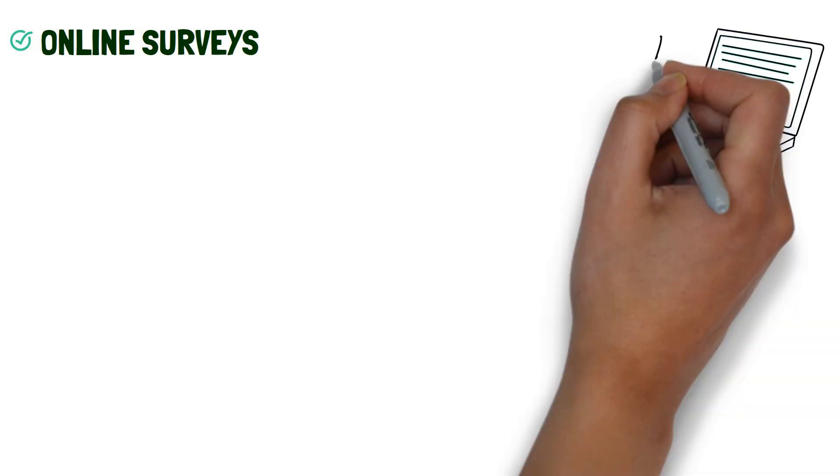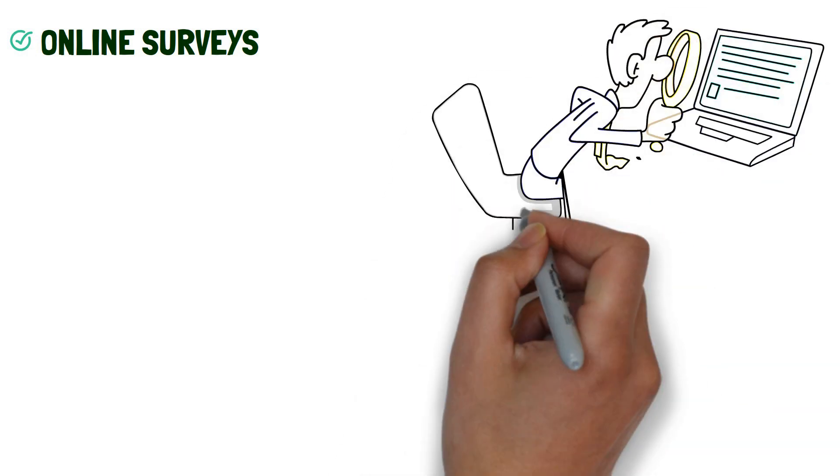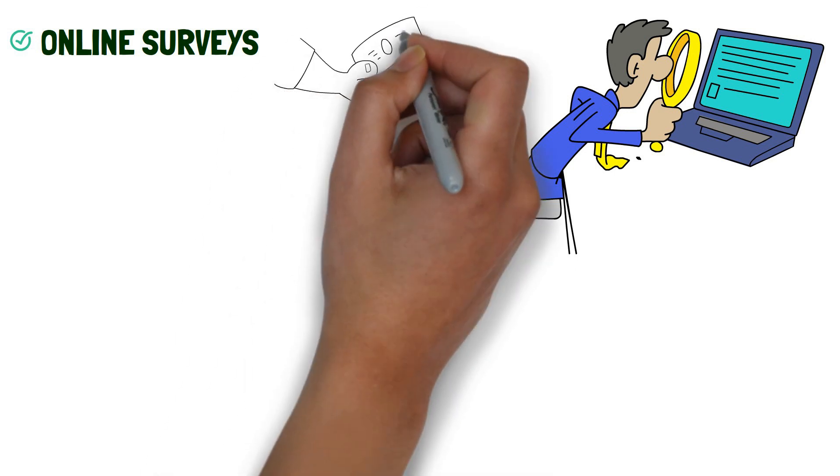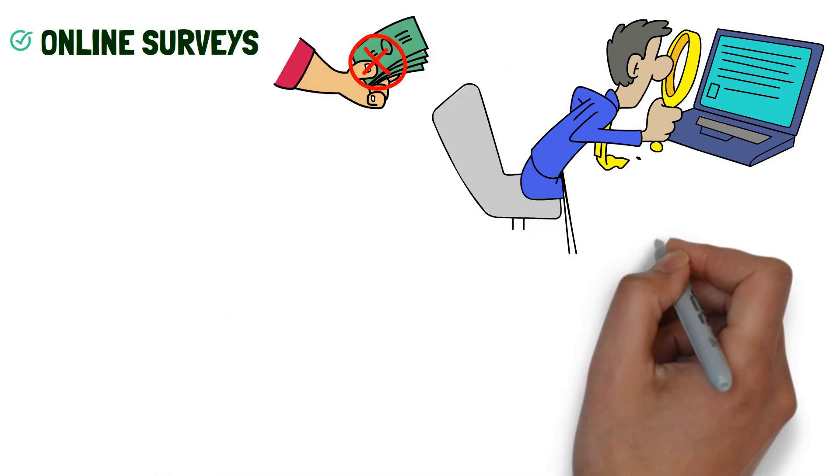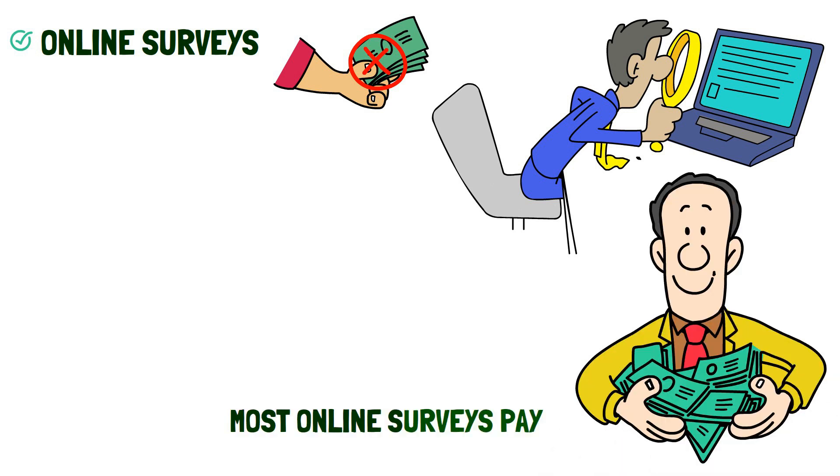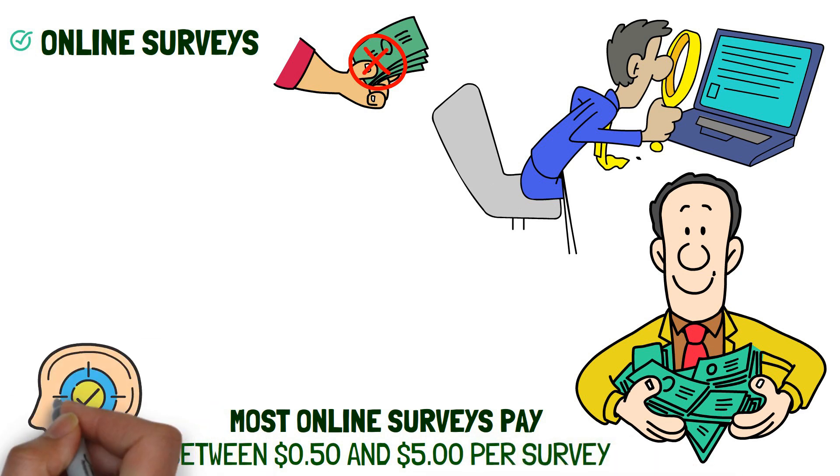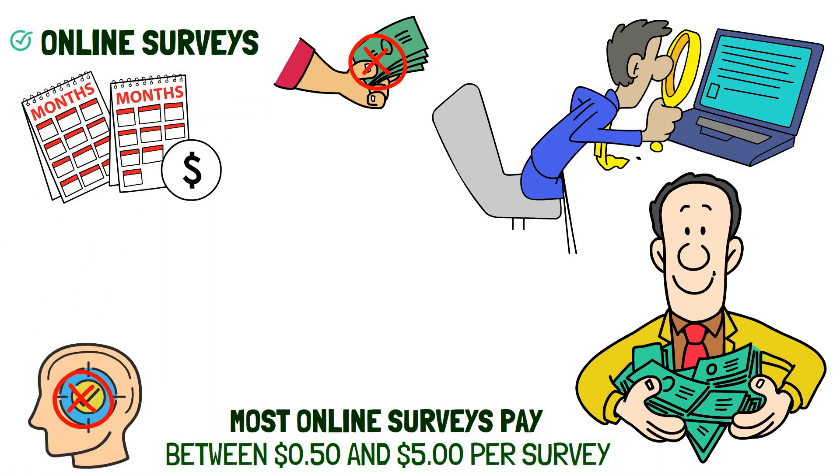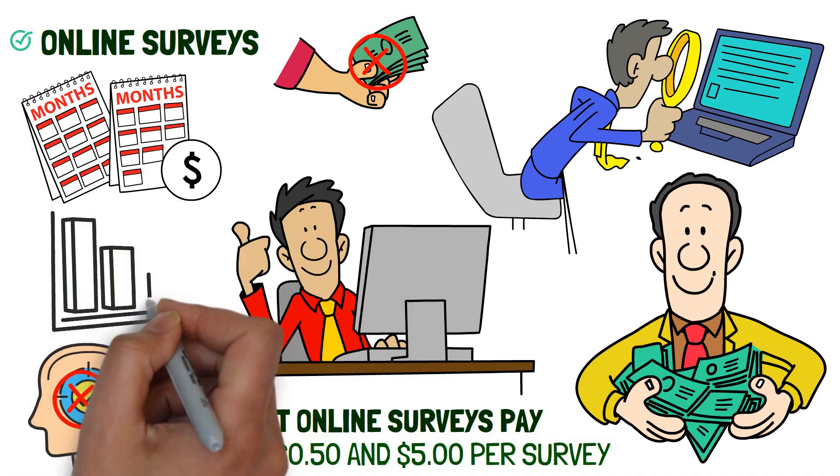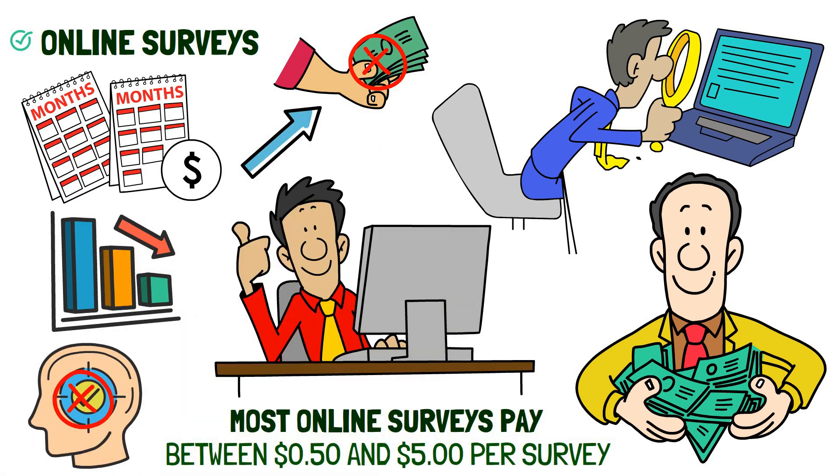Number 1: Online Surveys. One of the most popular ways to make money online is through taking online surveys. These surveys may not make you enough money to quit your day job, but they can be a great way to make some extra cash. Most online surveys pay between $0.50 and $5 per survey, with a realistic goal of about $30 a month. This is one of the simplest ways to make money online, as it requires zero skills and no startup cost.